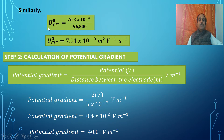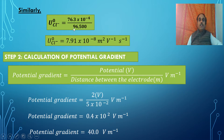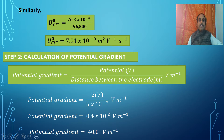Similarly, the ionic mobility of Cl⁻ is calculated as λ°(Cl⁻) divided by F: 76.3 × 10⁻⁴ divided by 96500, giving 7.91 × 10⁻⁸ meter² per volt per second.